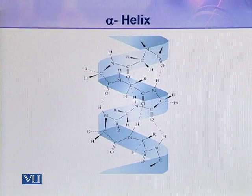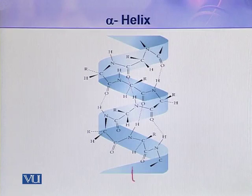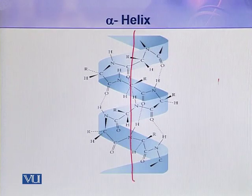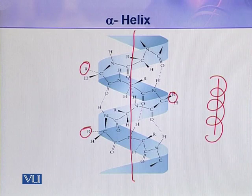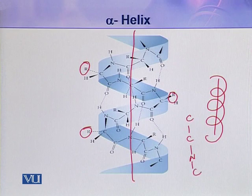In an alpha helix, the polypeptide chain is coiled round an imaginary axis, and this helix is helically coiled along this axis. In this helix, the R groups lie outside the helix while the main backbone is contained by the C-N-C-N-C-C bonds. The R groups, which are bulky groups, lie outside the polypeptide chain.